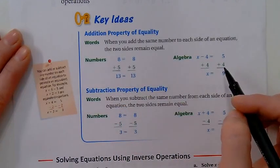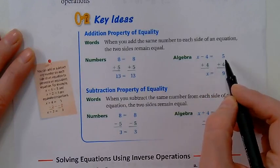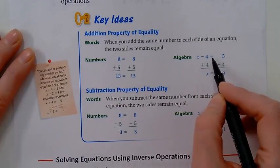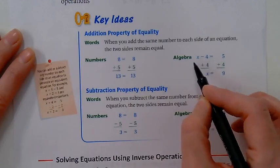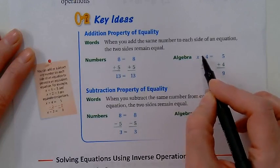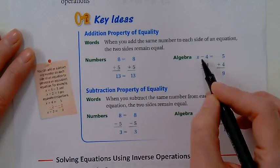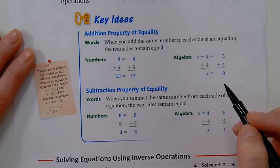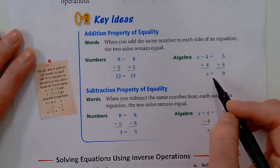This still rings true when we do that in algebra. Right now I have x minus 4 equals 5, so I know that these are equal and I want to get x by itself. So what I gotta do to get rid of, or to make x by itself, is to get rid of this 4. And right now it's subtracting. Well, I gotta do the opposite, right?